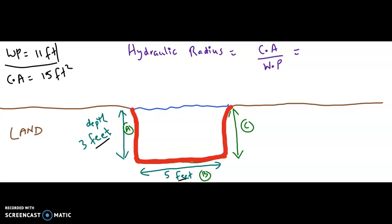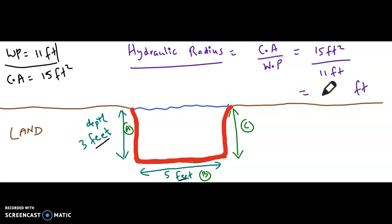So now we have the cross-sectional area and the wetted perimeter. The cross-sectional area is 15 square feet divided by the wetted perimeter of 11 feet. There will be a cancellation in feet, so the unit for the hydraulic radius will be in feet. 15 divided by 11 gives 1.36 feet — so the hydraulic radius is 1.36 feet.